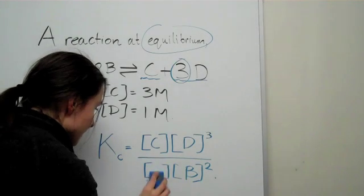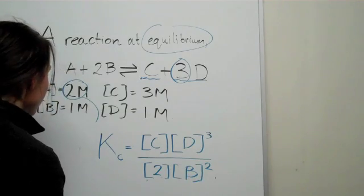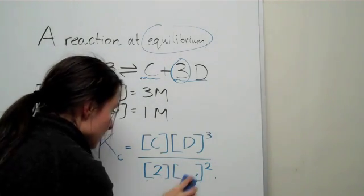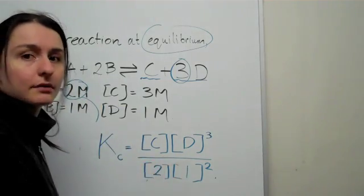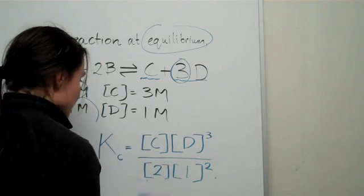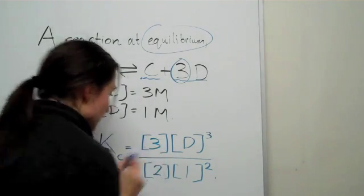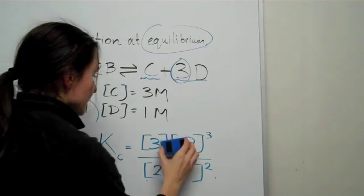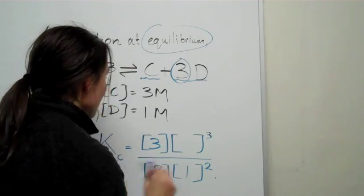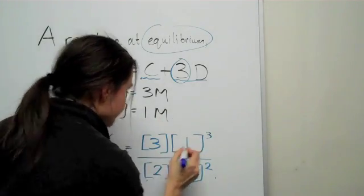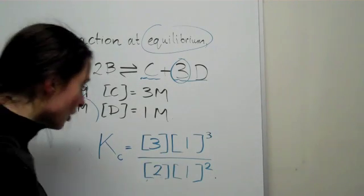We know that the concentration of A is 2M. The concentration of B is 1 molar. Make sure that it's in molar, not volume, not mole, must be a concentration of molar. C is 3M and D is 1M. Now we've got all we need to do is plug that into your calculator.